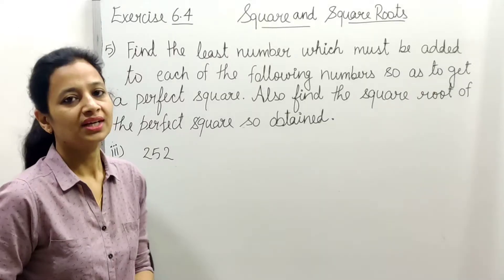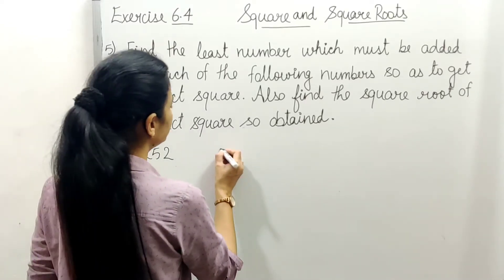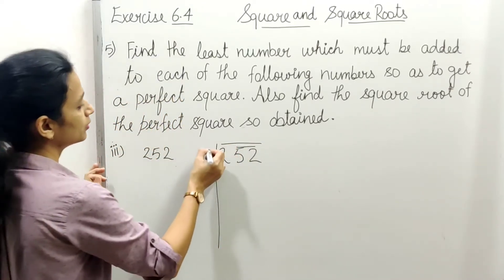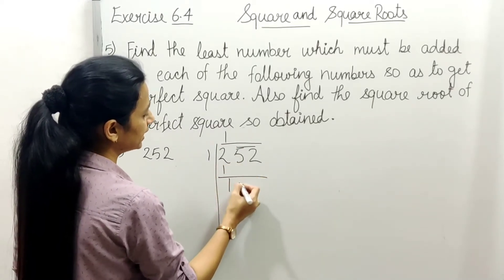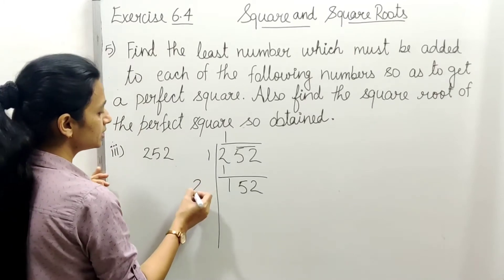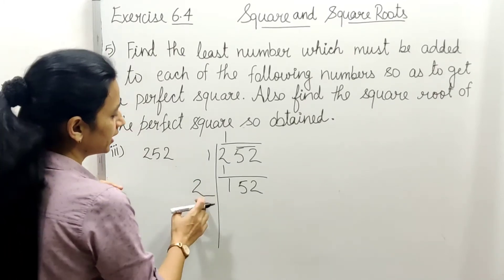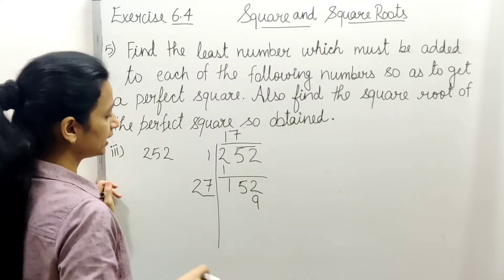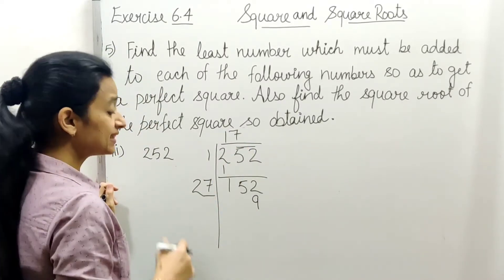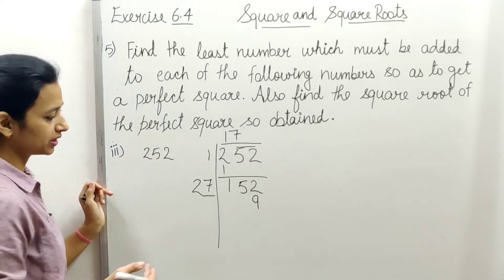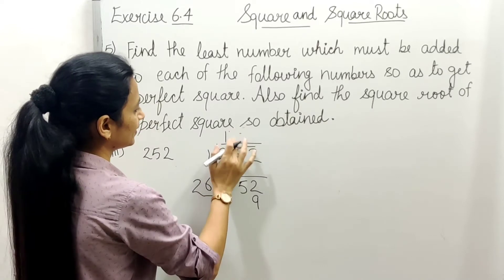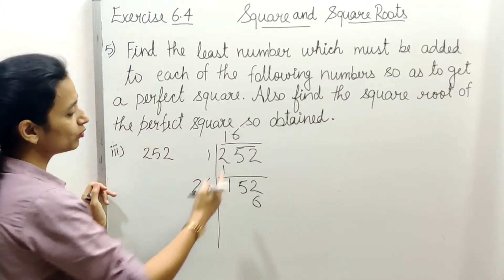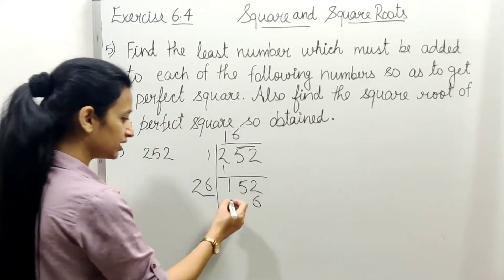Now next, 252. Let's find its square root. 252, first pairing. How many times? 1, 1×1=1, minus, 152 remains. New divisor is 2. With 2, let's check: 2×7=14, so try 7 times. 7, 7×7=49, 9 here, 4 carry over, 7×2=14 plus 4 is 18. That means 7 times it becomes too large.